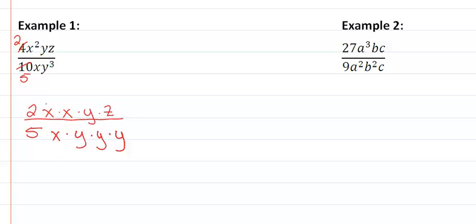Now we're looking for factors they have in common. x and x is a common factor, and y and y is a common factor. Basically I'm just listing what's left over, and I'm going to put it back into exponential form for those that need it.